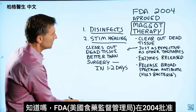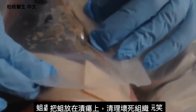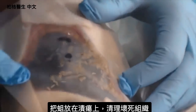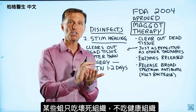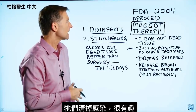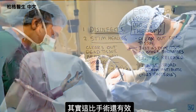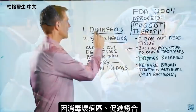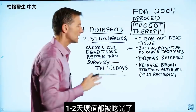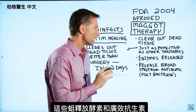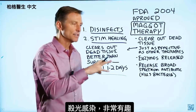The FDA did approve in 2004 maggot therapy, and I'm not being sarcastic. They actually put maggots in the ulcer to clean up the dead tissue. Certain types of maggots eat the dead tissue and they don't eat the healthy tissue, so they clear out the infection. In fact, they're finding that it's even more effective than certain surgeries because it disinfects the area and stimulates healing. These maggots actually release enzymes and also release a broad-spectrum antibiotic to kill off the infection.